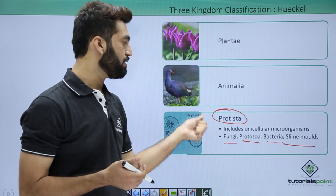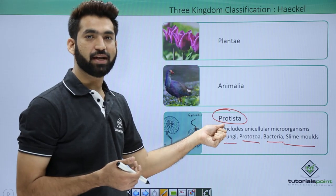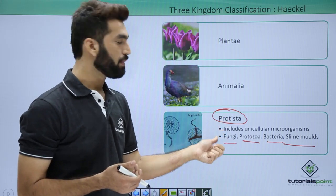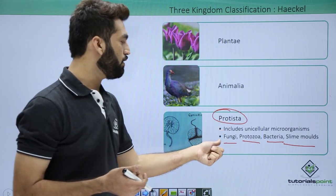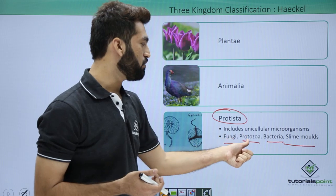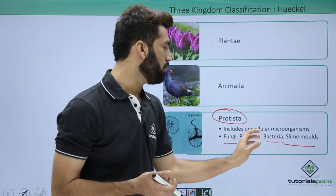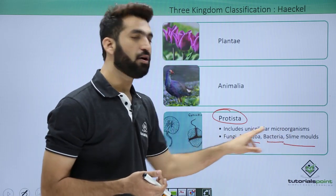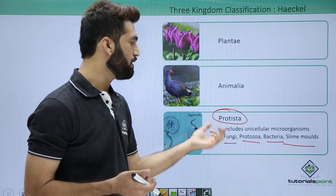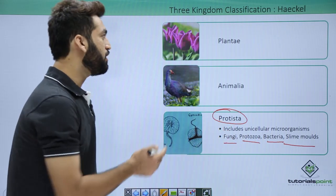Ernst Haeckel gave this third kingdom classification of Protista and mentioned all these organisms like fungus, protozoa, bacteria, and slime molds. Basically they all are unicellular microorganisms and this group is called Protista.